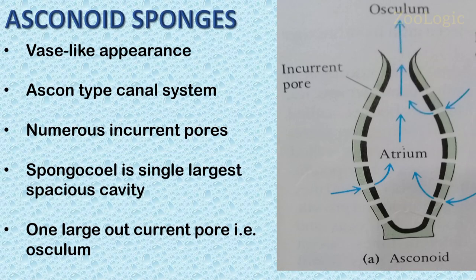Sponges with the simplest body structure are called asconoid sponges. They have the ascon-type canal system, which is the simplest amongst all. They are small, only a few centimeters tall. The body is perforated with a large number of incurrent pores for inward flow of water. The spongocoel is the single large spacious cavity in asconoid sponges. It is lined by choanocytes that are flagellated, and it opens outside through a single narrow circular opening known as the osculum.